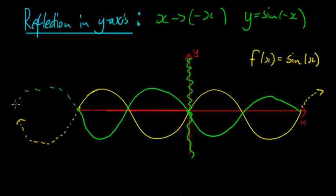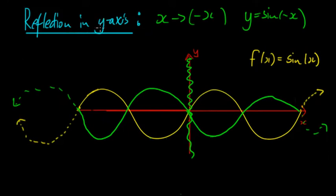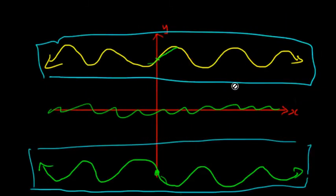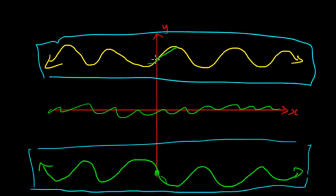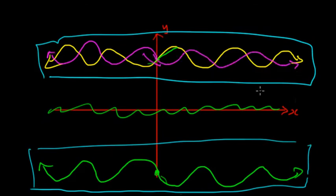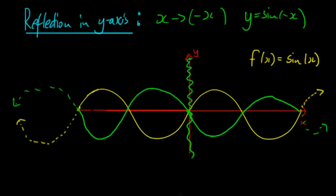You might think that reflecting in the y-axis looks the same as reflecting in the x-axis — and for the basic sine graph it does. However, once you add dilations and translations they become very different. For example, if we reflect a translated graph in the x-axis it looks one way, but reflecting the same graph in the y-axis will look quite different — it will still be positive rather than negative. It's really important to distinguish between them.